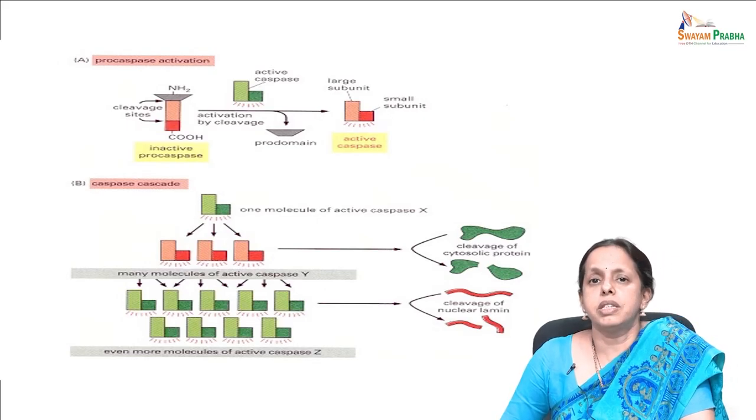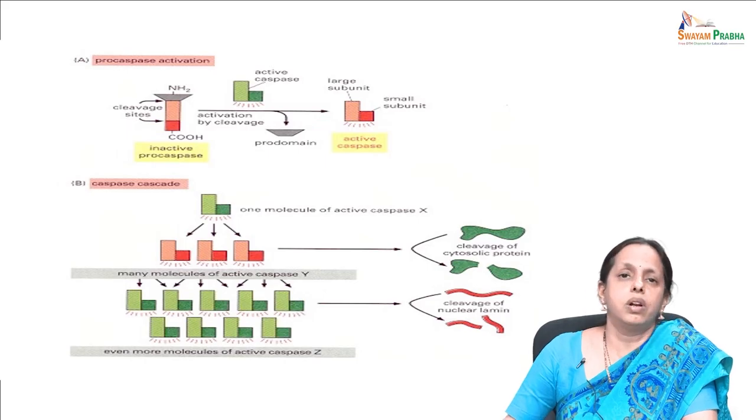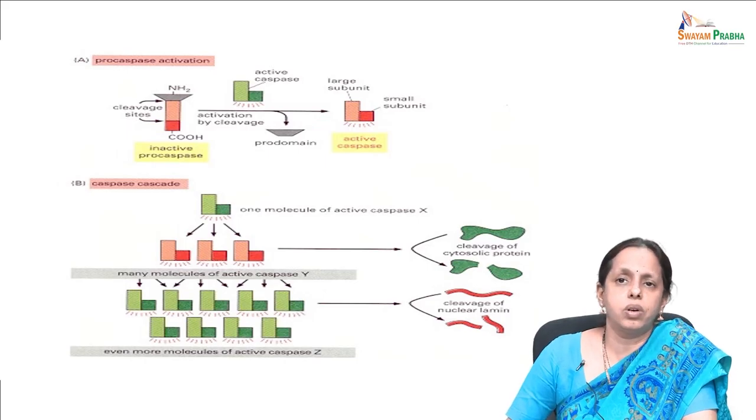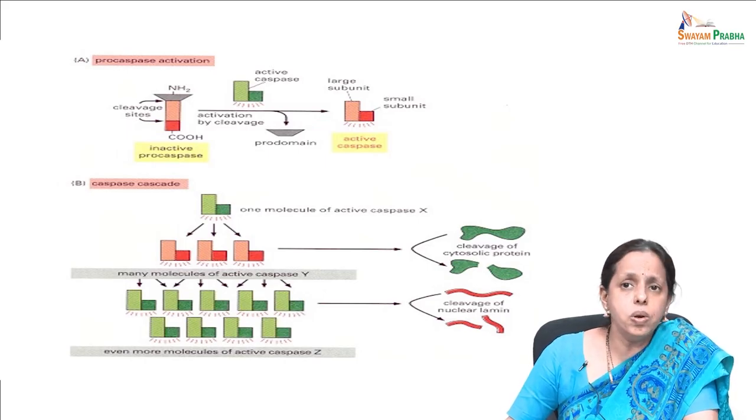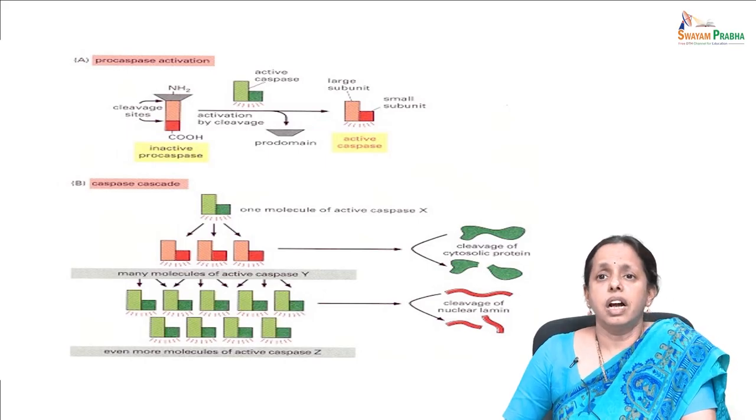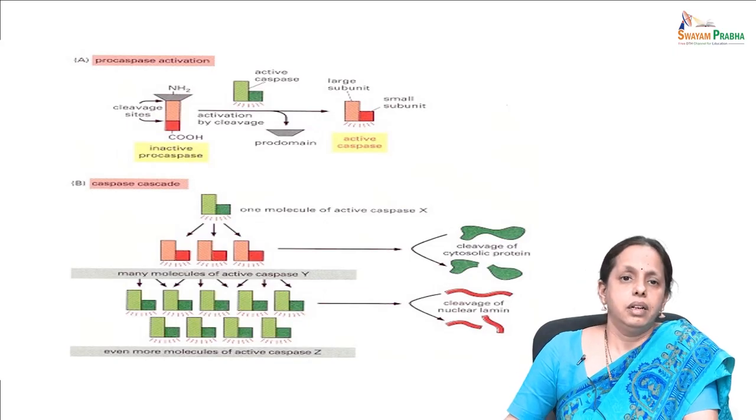Some of these activated caspases — called effector caspases — then cleave key proteins in the cell including specific cytosolic proteins and nuclear laminin proteins, which further leads to the controlled death of the cell.